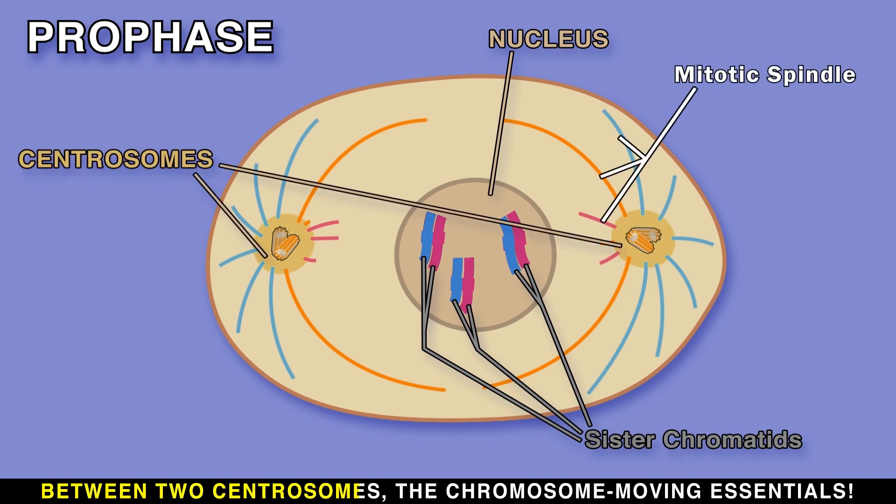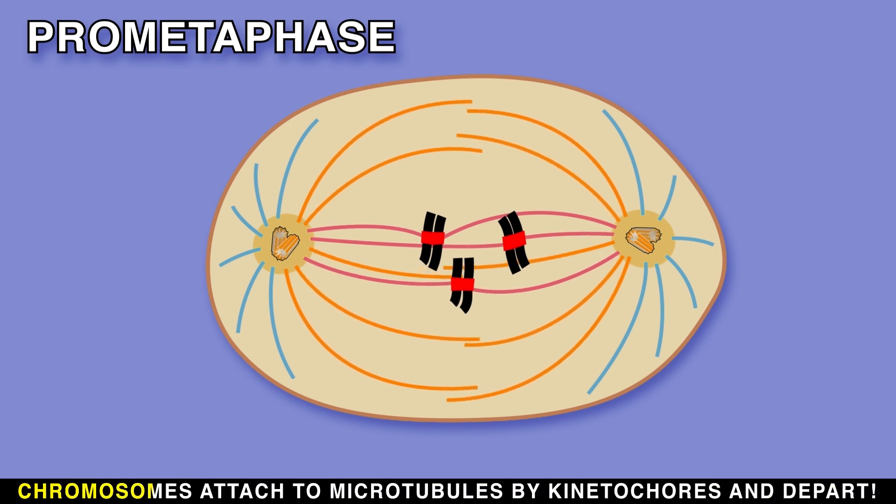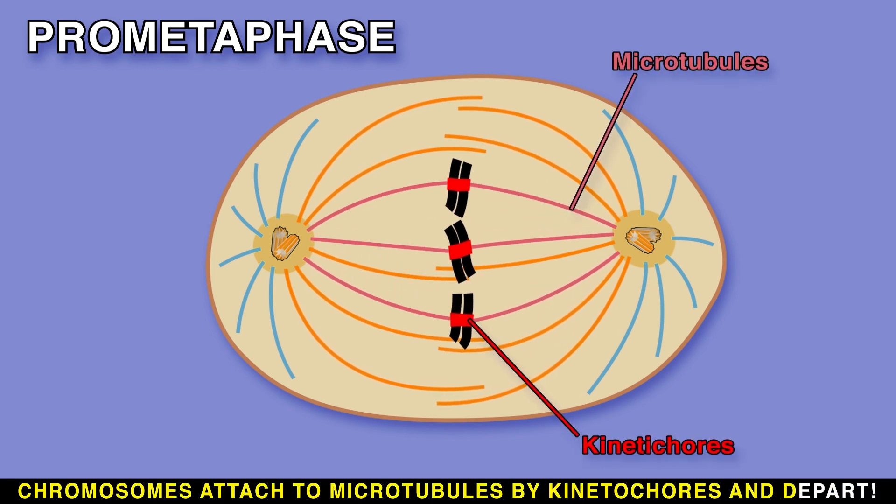Between two centrosomes, the chromosome moving essentials. The cell's nuclear membrane breaks down at prometaphase's start. Chromosomes attach to microtubules by kinetochores and depart.